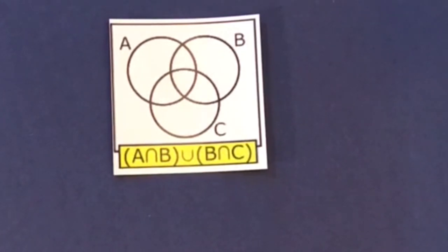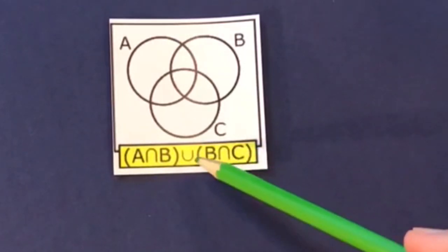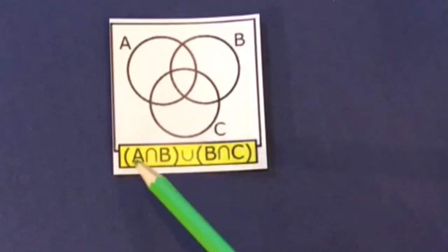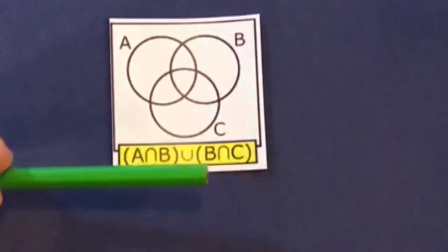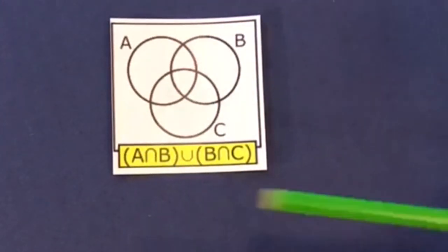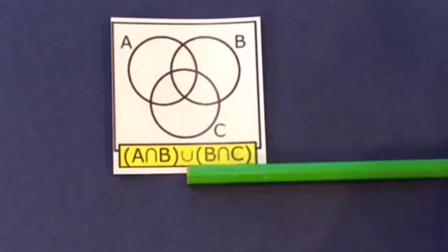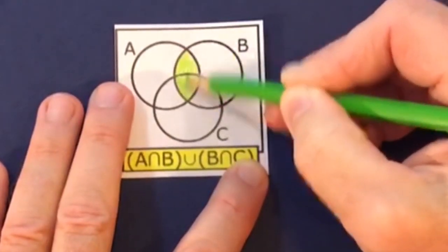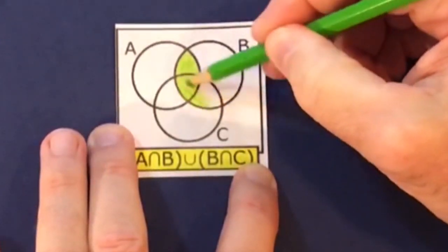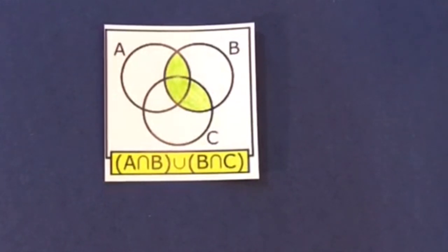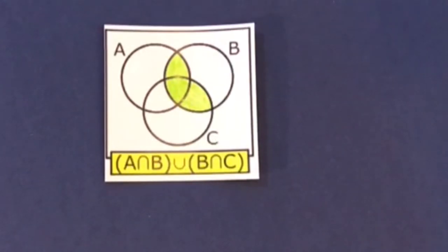For the final level two example, there's a large expression with a union sign in the middle, so we do each side independently. One side is A intersection B, and the other side is B intersection C. Colour in A intersection B, then colour in B intersection C. Have a go at the online exercise — click the check button, use the undo button or choose black to remove colour. I'll be back for level three.